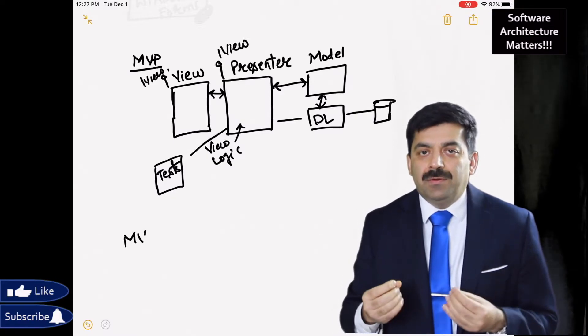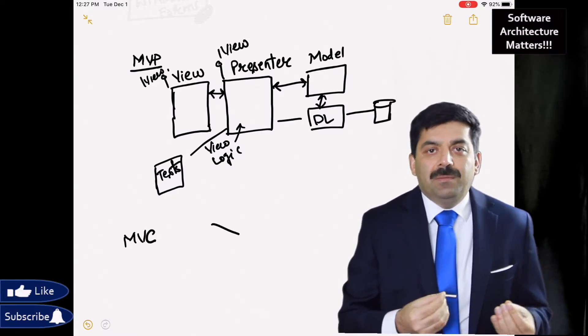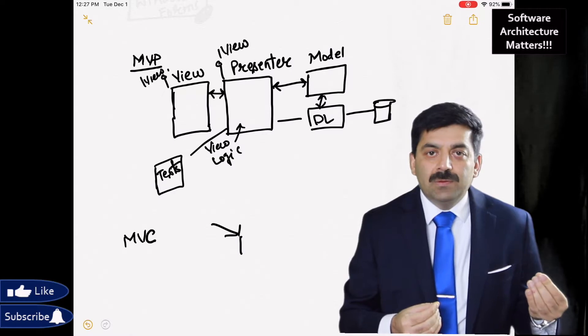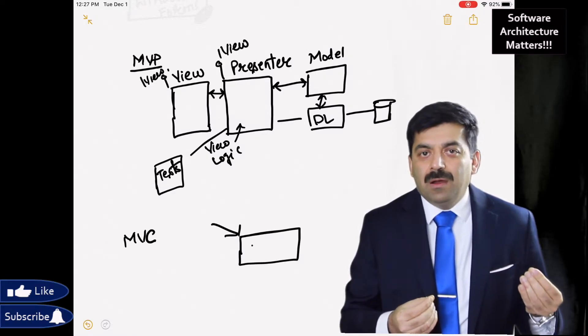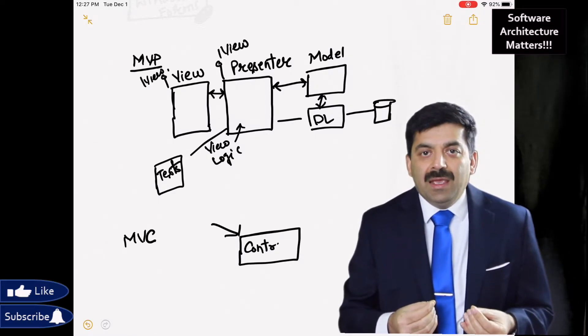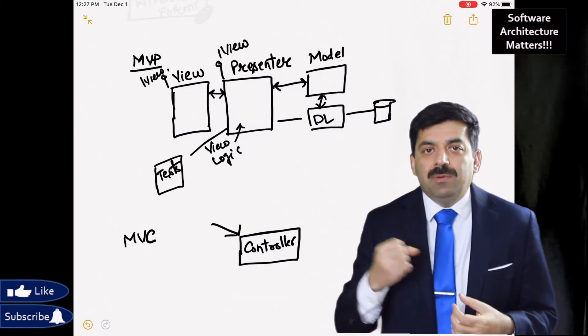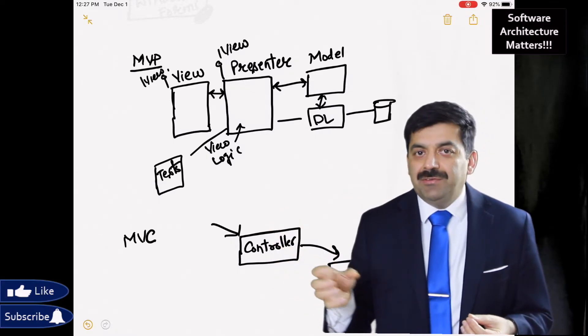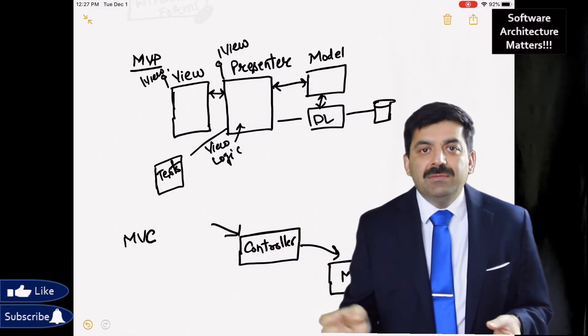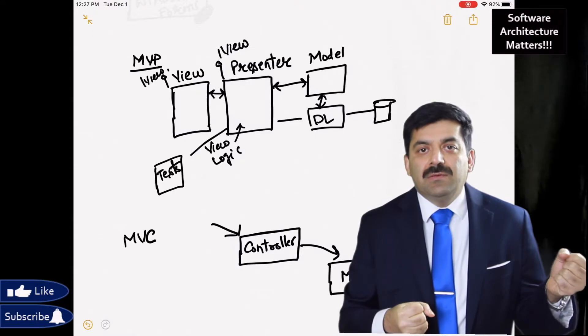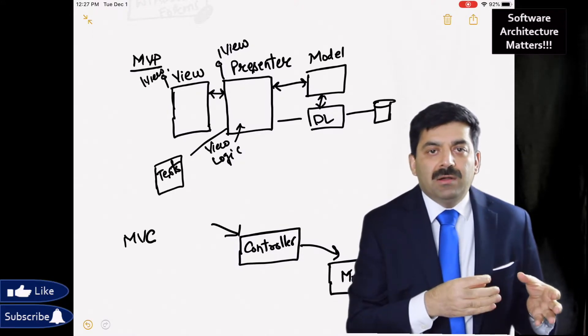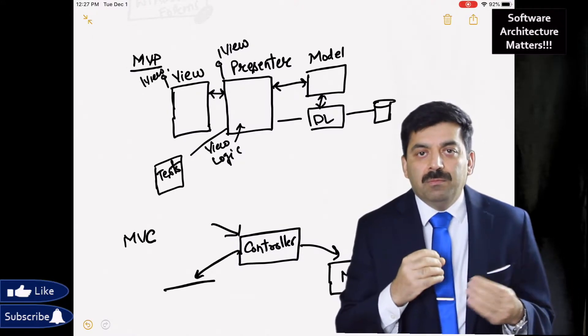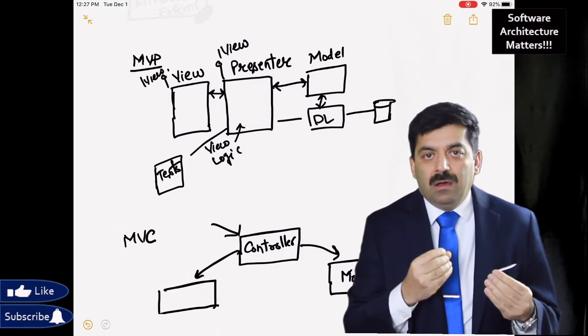There came MVC pattern - model view controller. In model view controller pattern what happens, the first input goes to the controller and controller then manipulates some model - get the order, whether this inventory is processed - and gives order and then it chooses a view and gives the model to the view so that view can show that order information.